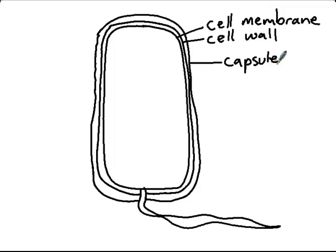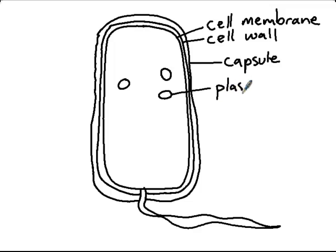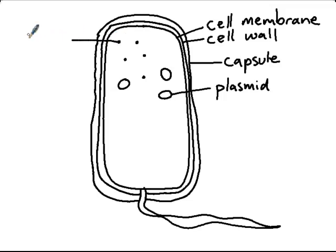Now for the inside bits. I'm going to draw a few loops here — these are plasmids. And these little dots here are ribosomes. They're smaller than in eukaryotic cells. These are 70S ribosomes.